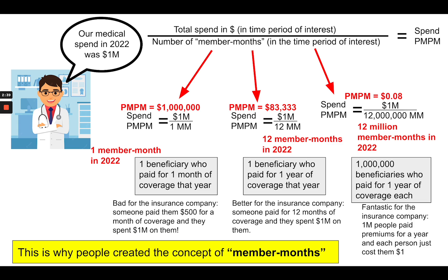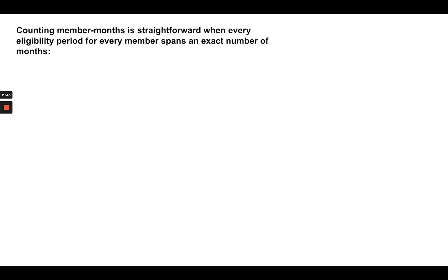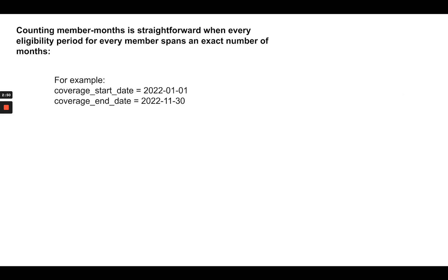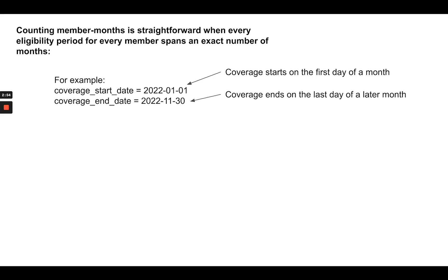Counting member months is pretty straightforward when every eligibility period for every member spans an exact number of months — for example, if coverage starts on the first day of a month and ends on the last day of a month for every single beneficiary. In that case, counting member months is straightforward, and here we would have exactly 11 member months.